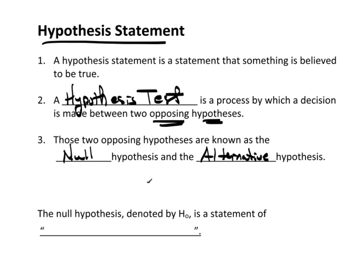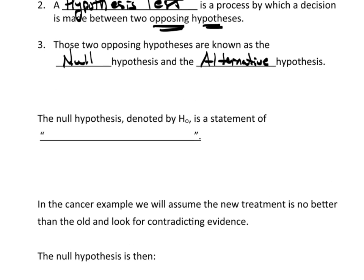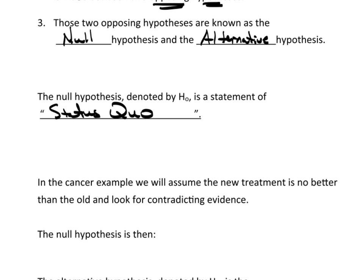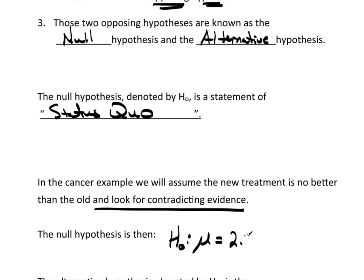These are two hypothesis statements that oppose each other. The null hypothesis, which we denote by H0, is a statement of the status quo — in other words, it's a statement of what we already accept to be true. In the cancer example discussed earlier, we assume the new treatment is no better than the old. So the null hypothesis is: H0: mu equals 2.25.